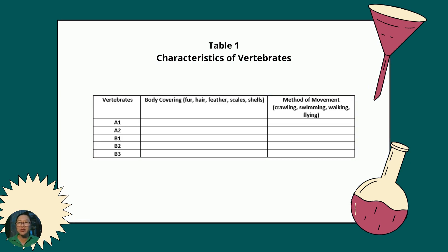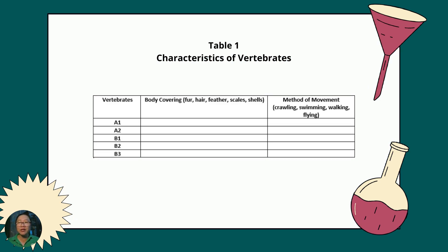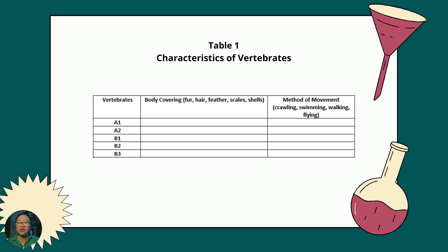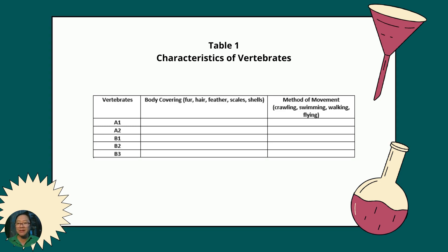Once you are done sorting the animals, you can construct now a table like this. In the first column, the different subsets like A1, A2, B1, B2, and B3 are written. In the second and third column are the properties we want to observe like their body recovery and method of movement. You can add other properties like reproduction, nutrition, and many more.